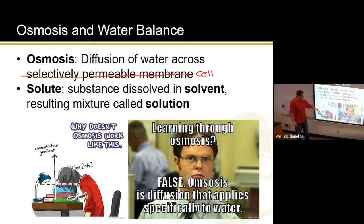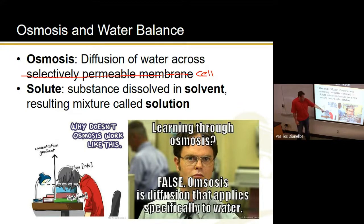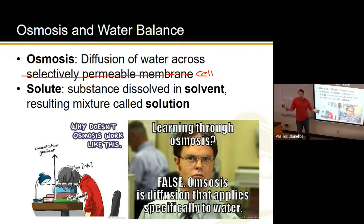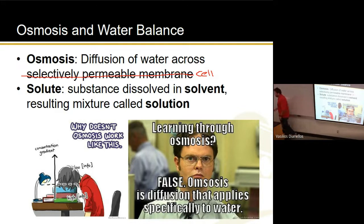I've seen this meme before — might as well talk about it. Once you're thinking about osmosis, you've probably seen some version of this: why doesn't osmosis work like this? There's a low concentration of knowledge in someone's head and a high concentration in the books. The idea is that diffusion moves things from high to low concentration, but that's only everything else — it's only water when we're talking about osmosis. When we talk about osmosis, we're only talking about water.